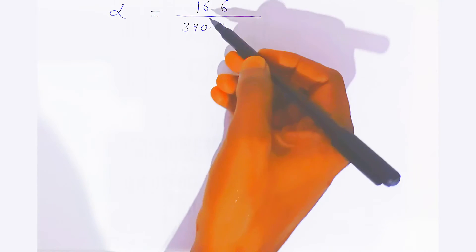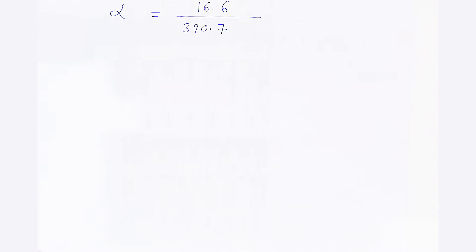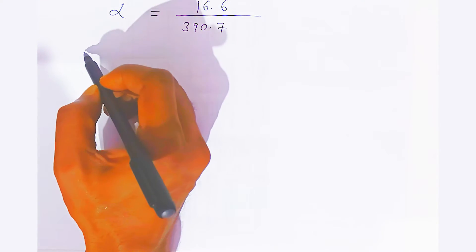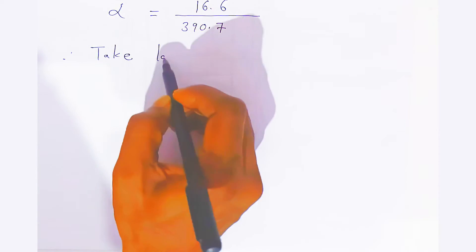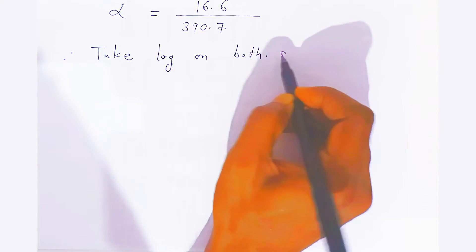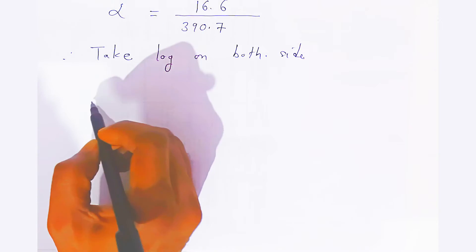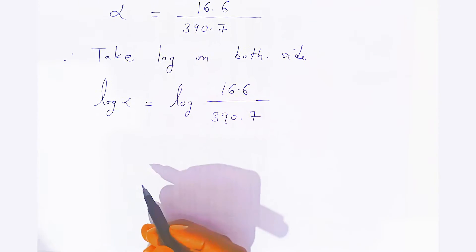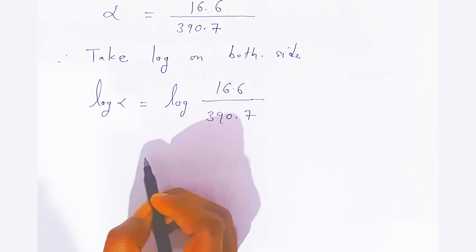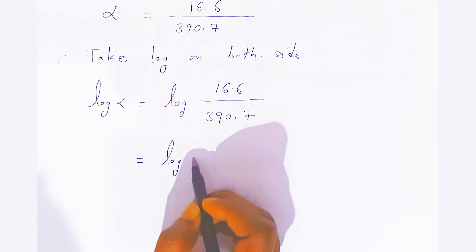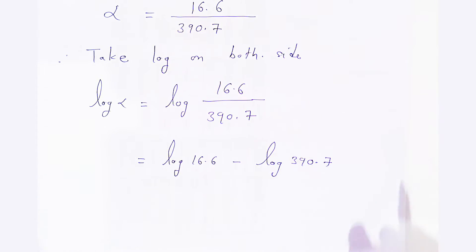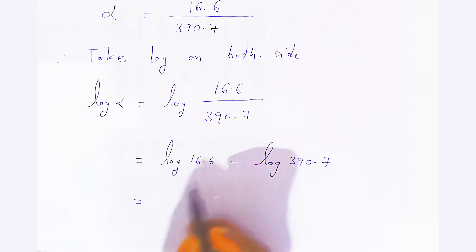In examination, you have to do this with the help of the log table. You have to take the log on both sides to find the degree of dissociation. So it will become log of alpha equals log of 16.6 upon 390.7. Since it is a division, this becomes log of 16.6 minus log of 390.7. Now when you take the log of 16.6, before the decimal you have 2 digits.